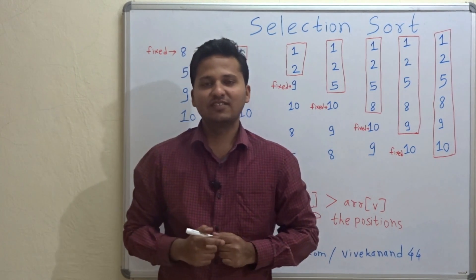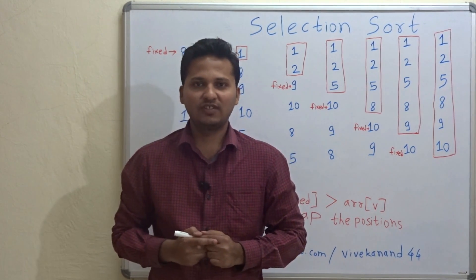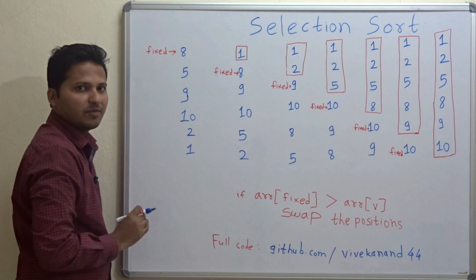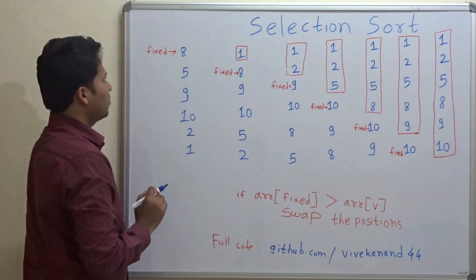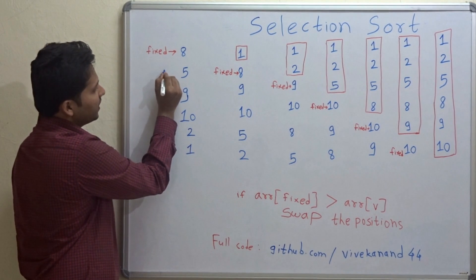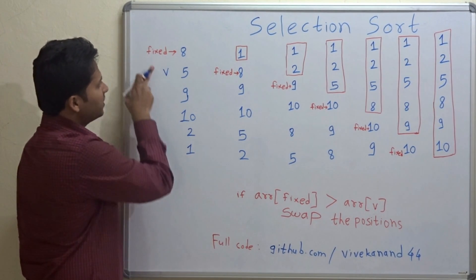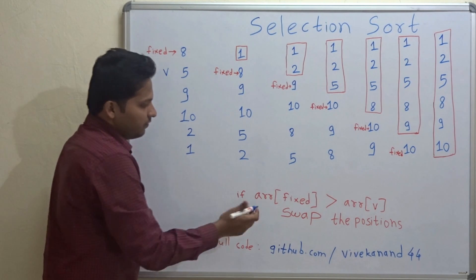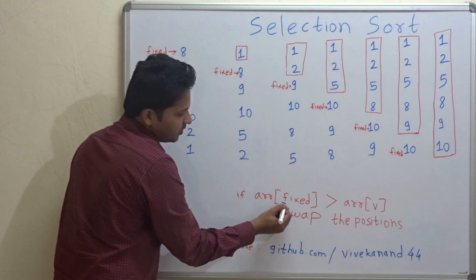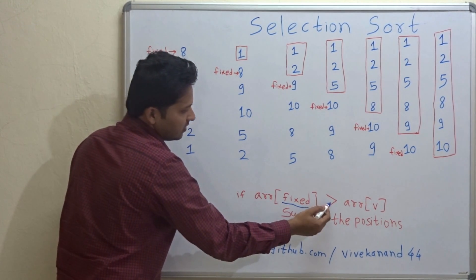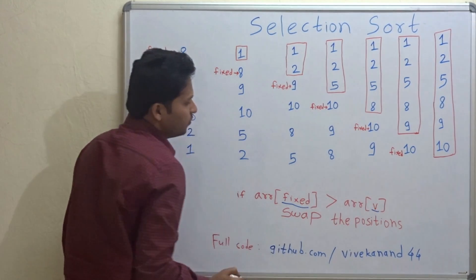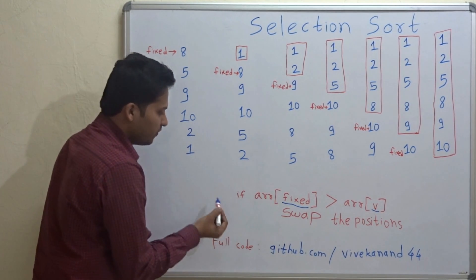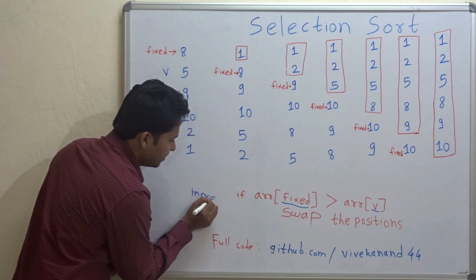Hello friends, today we are going to see the algorithm for selection sort. Let's take an example. This is an array containing six elements. In selection sort there is a fixed pointer and a variable pointer which always points to the next position of the fixed pointer. If the value at the fixed pointer is greater than the variable pointer value, then we have to swap the positions. This is for sorting the list in increasing order.